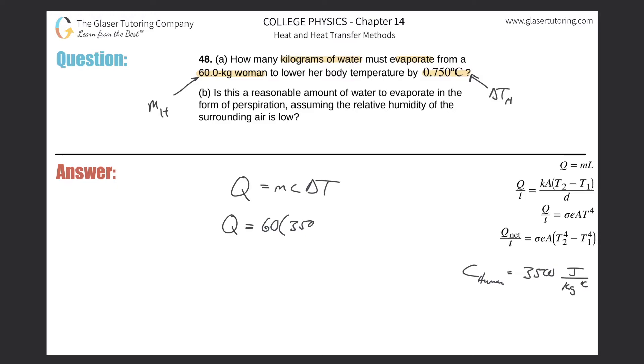The specific heat is 3,500, and then the change in temperature is going to be lowered, right? So the final should be less than the initial, and therefore this should be negative. But the sign here just represents if heat's being gained or lost. It doesn't really mean that it's negative energy. There's no such thing as negative energy.